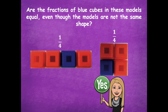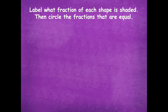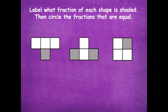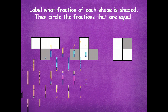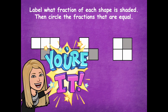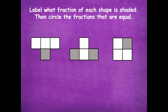Let's dive into this a little bit more. We're going to label what fraction of each shape is shaded, and then circle the fractions that are equal or equivalent. Here are some examples — pause the video, label each fraction of the shaded part, and then circle the ones that are the same or equivalent.